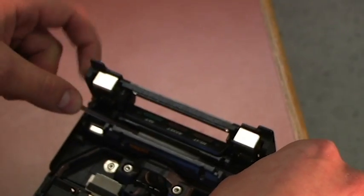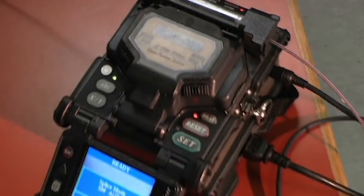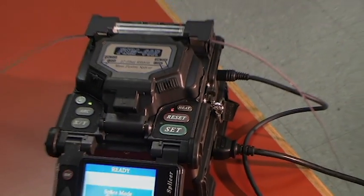We'll set it here in the heat shrink oven. The heat shrink oven should start automatically. When it's done it'll give you one long beep, and your splice is complete.